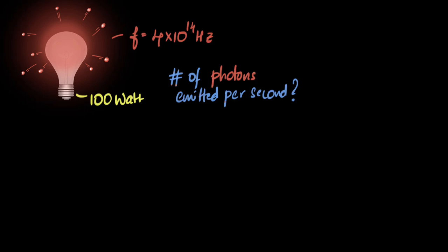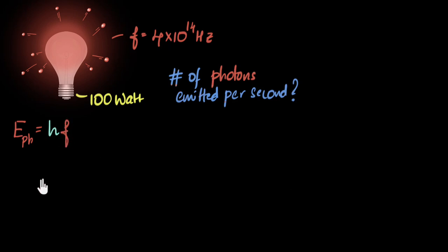How do we solve this? The first thing that comes to mind is I know how to calculate the energy of a single photon. From Planck's equation, that is going to be the Planck's constant h multiplied by the frequency of light. So that's the energy of a single photon. I know Planck's constant, I know the frequency, so I can calculate the energy of each photon.